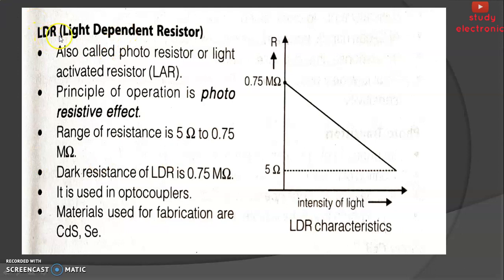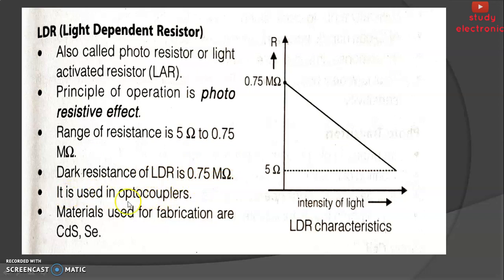Next, Light Dependent Resistor (LDR): it is also called a photoresistor or light-activated resistor. The principle of operation is the photoresistive effect. The range of resistance is 5 ohms to 0.75 megaohms. The dark resistance of an LDR is 0.75 megaohms. It is used in optocouplers. Materials used for fabrication are CdS and Se. The resistance increases as the intensity of light decreases.